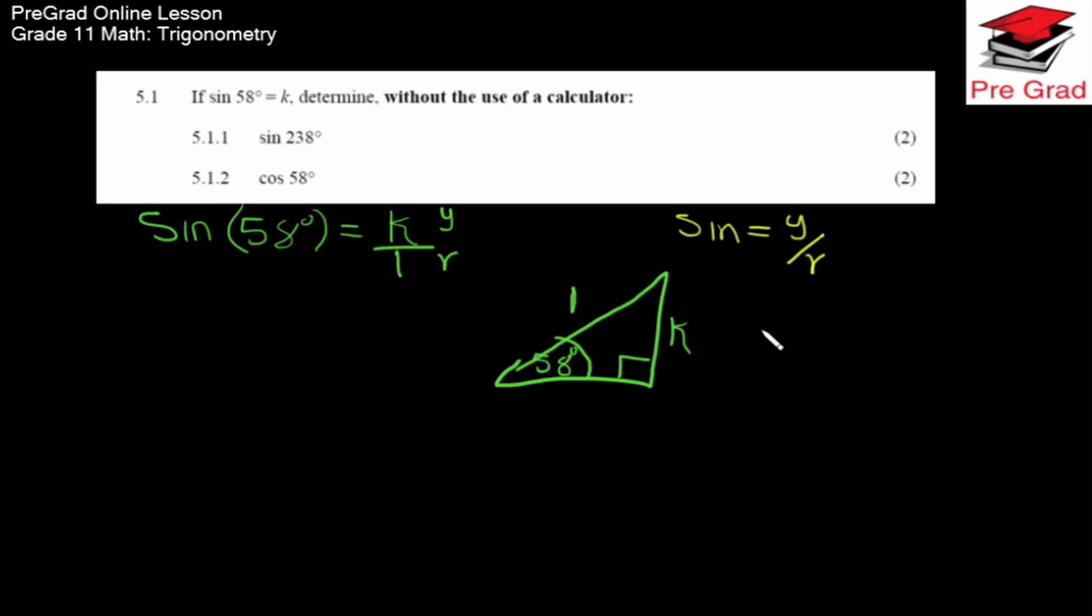So we need to find the value of x, which is the adjacent side, right? We use the Pythagorean theorem. So x squared plus y squared equals r squared. So x is the square root of r squared minus y squared.